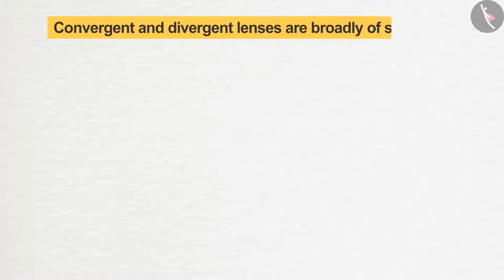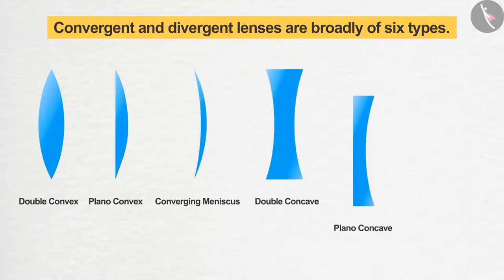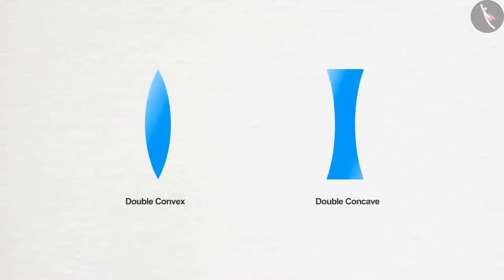Types: Convergent and divergent lenses are broadly of six types: double convex, plano convex, converging meniscus, double concave, plano concave, and diverging meniscus. These lenses are called spherical lenses. Out of these six types of lenses, we will only talk about two in our upcoming videos: double convex and double concave. They are usually known as convex lenses and concave lenses.